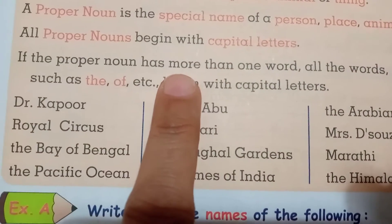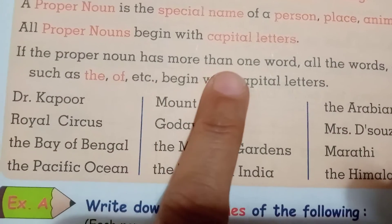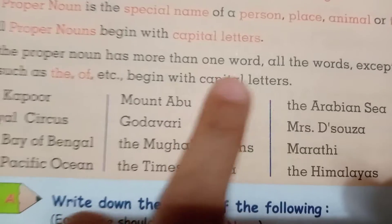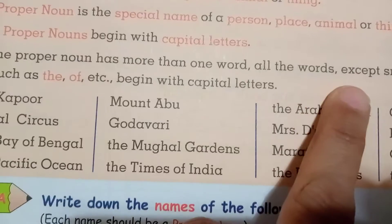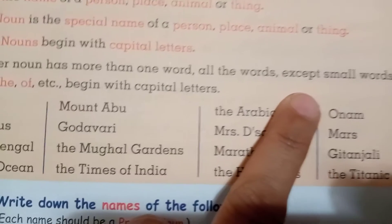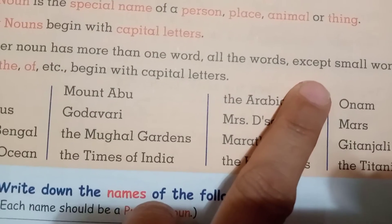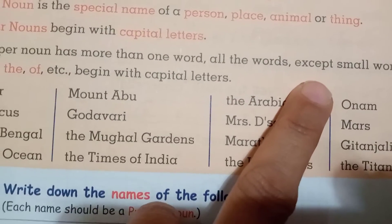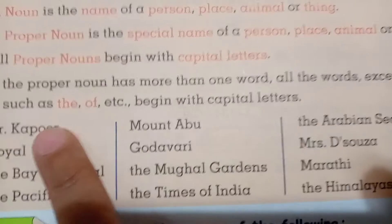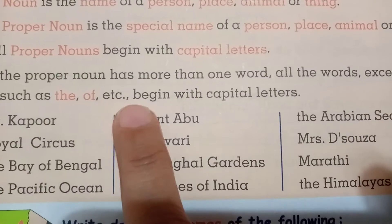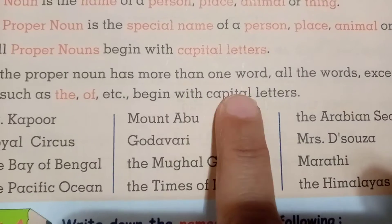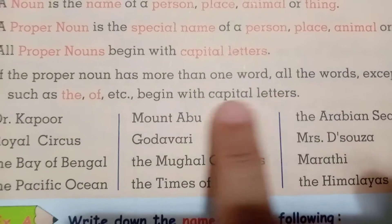अगर एक से ज़्यादा शब्द है, all words except small words — सब चीज़ें except small words को छोड़के, जैसे 'the', 'of' etc. — begin with the capital letters.